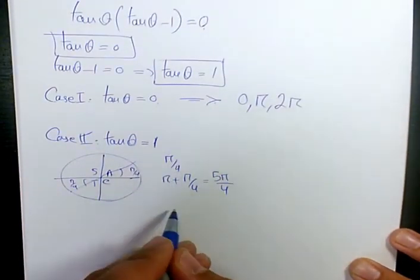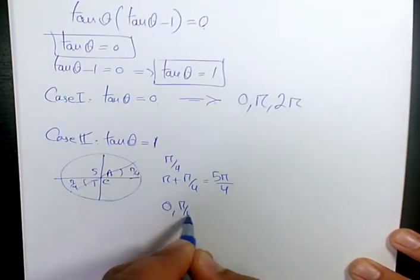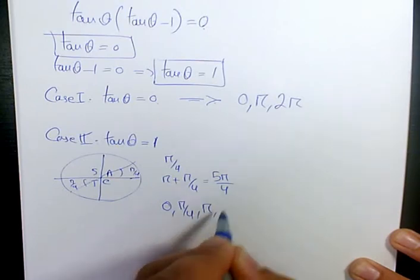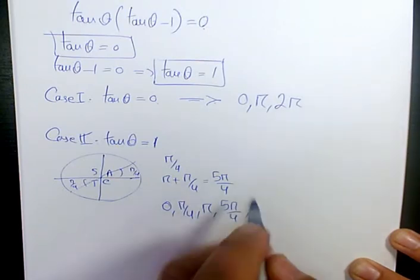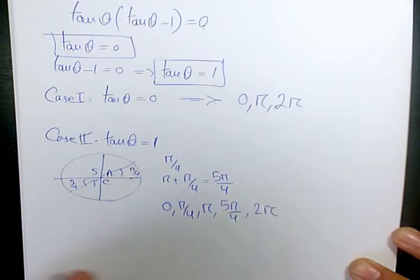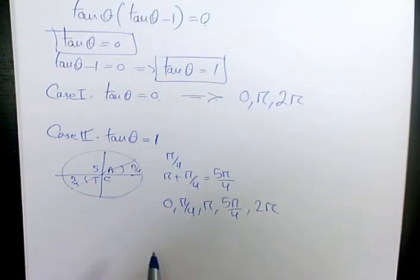So we have five answers: zero, pi over four, pi, five pi over four, and two pi. Five answers in terms of radians.